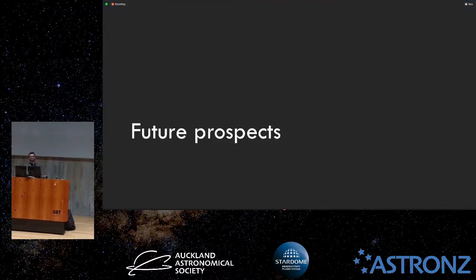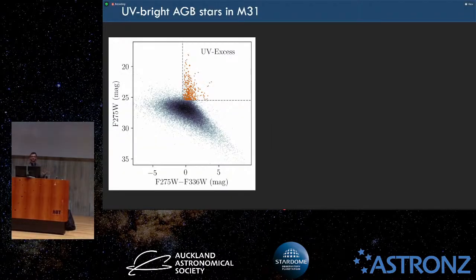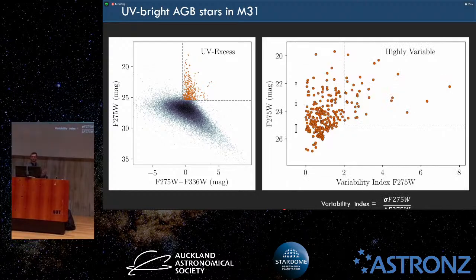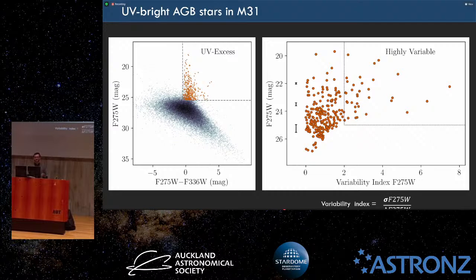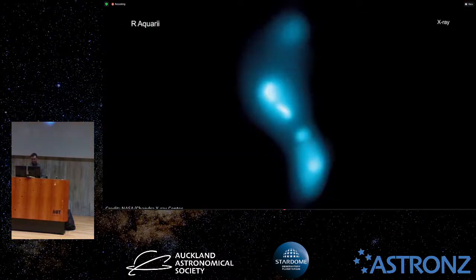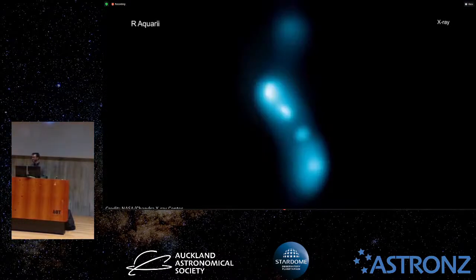Now I'll talk about the future prospects. This is a CMD showing a bunch of AGB stars that are bright in the ultraviolet. That's not usual for these really dusty, red, and obscured stars. Why are they bright in the ultraviolet? We think these are symbiotic systems — an animation is shown here.